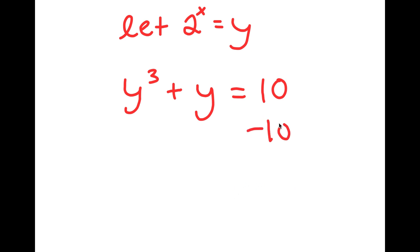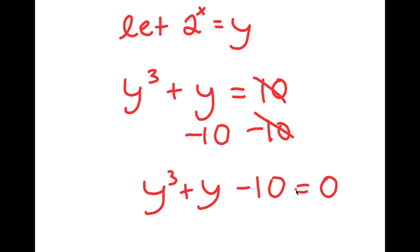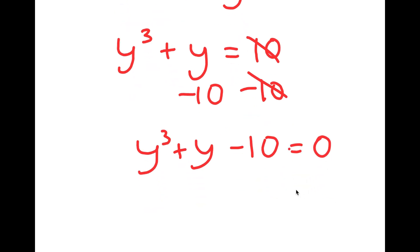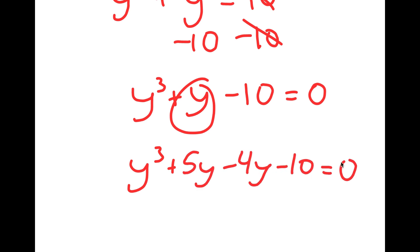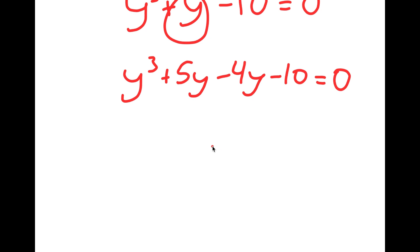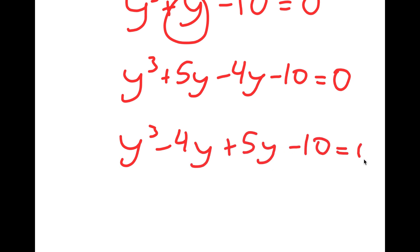If I subtract 10 on both sides, I get y to the power of 3 plus y minus 10 is equal to 0. Now I can rewrite y as 5y minus 4y. I'm going to switch the order of 5y and 4y, so I now have y to the power of 3 minus 4y plus 5y minus 10 is equal to 0.